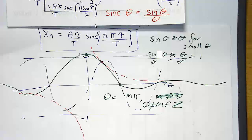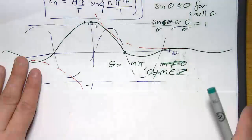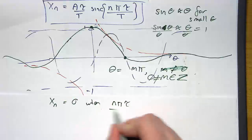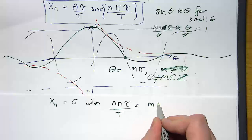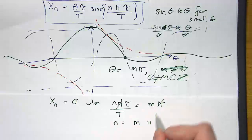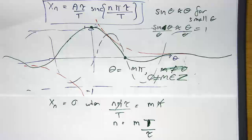So we've got x of n, which is basically sinc of n pi tau over capital T. The first question is when does that equal zero? So x of n is equal to 0 when n pi tau over capital T is equal to a multiple of pi. Both n and m are integers here, so we'll rearrange that slightly: the pi's cancel when n is equal to m times capital T divided by tau.